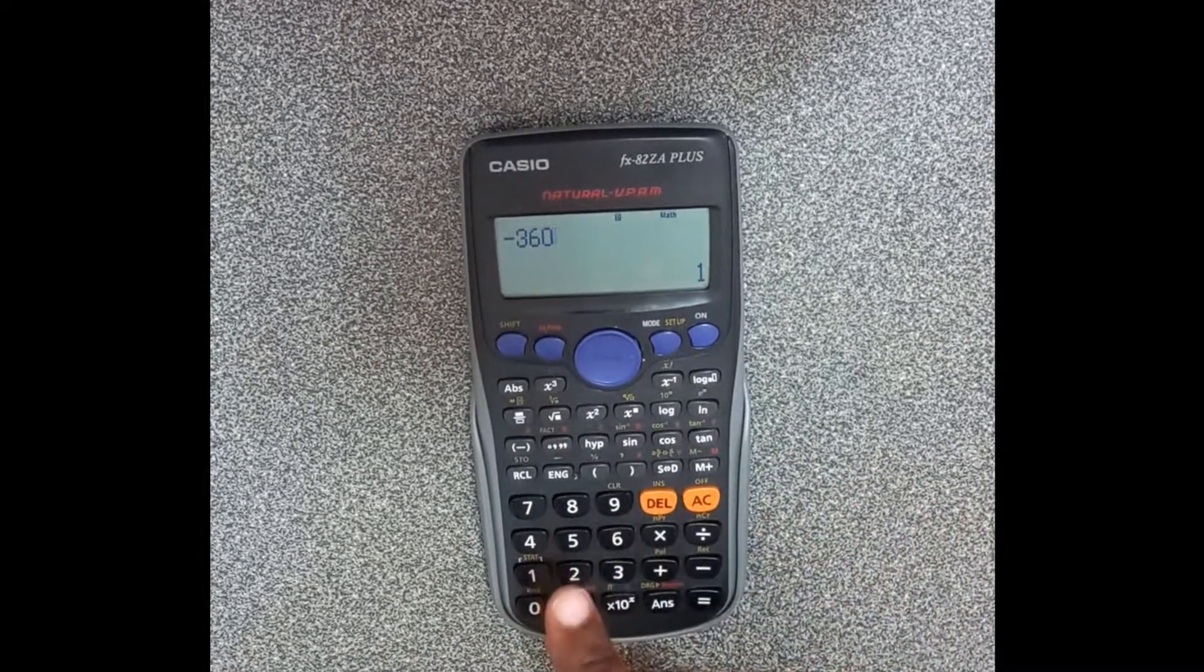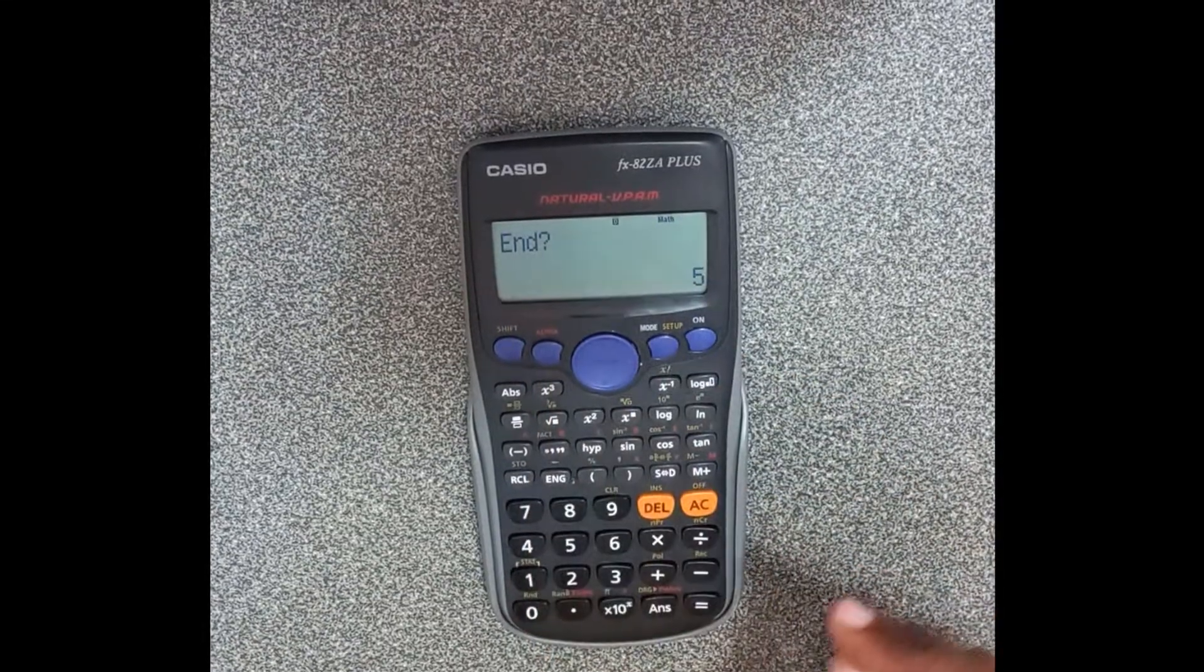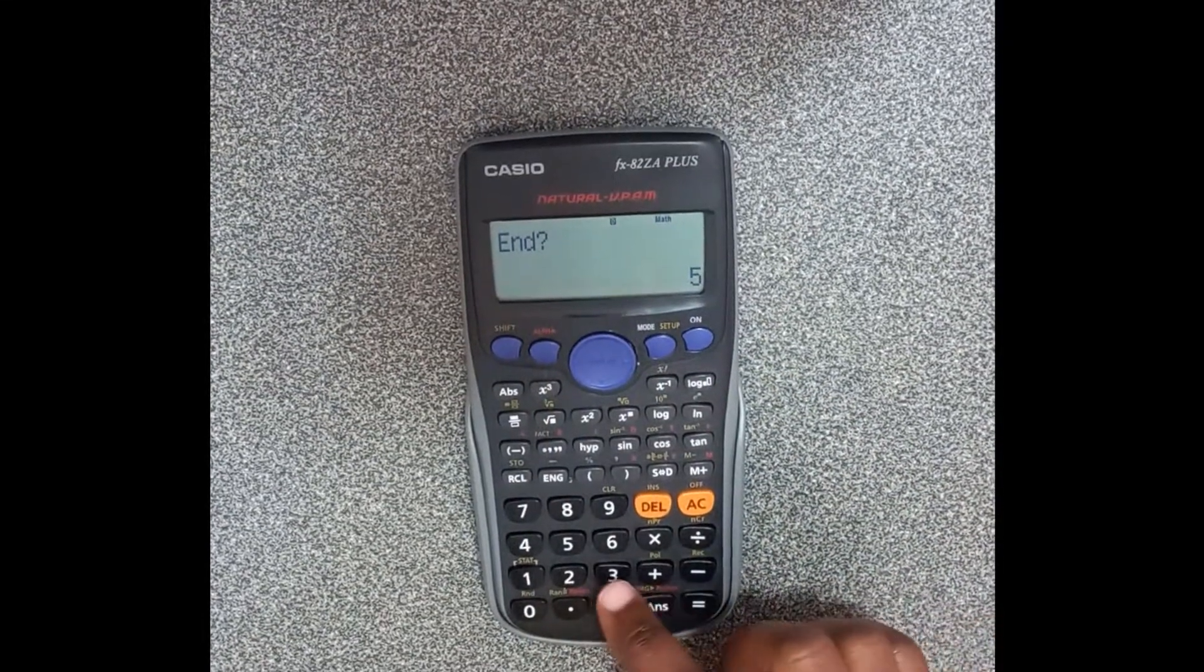These are the x values. Then we say equals. It says end, we're going to end where the interval tells you. You're gonna end at 360.